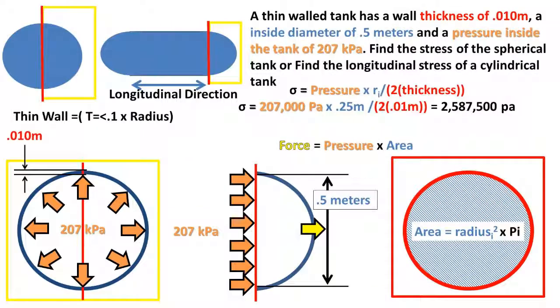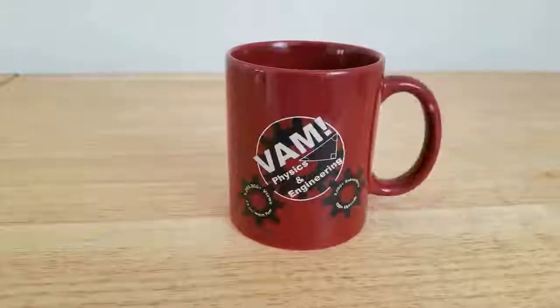For our final step, we plug in our pressure of 207 kilopascals, internal radius of 0.25 meters, and wall thickness of 0.01 meters. We get a stress of 2,587,500 pascals for the spherical pressure vessel or the longitudinal stress of a cylindrical pressure vessel. That concludes this video.